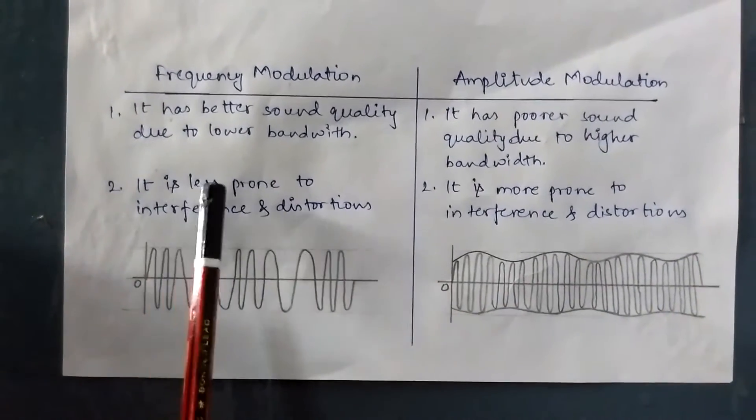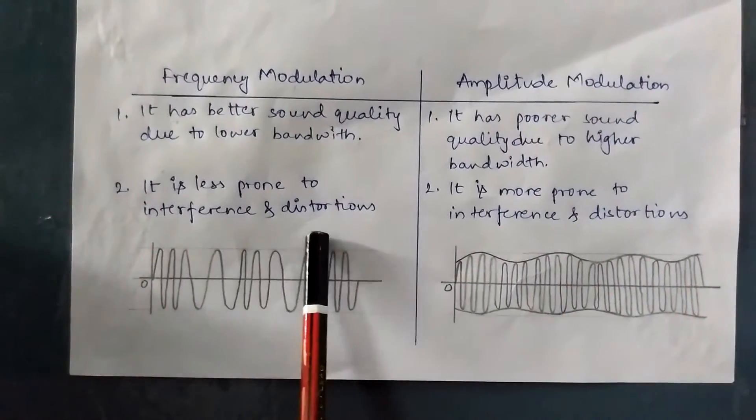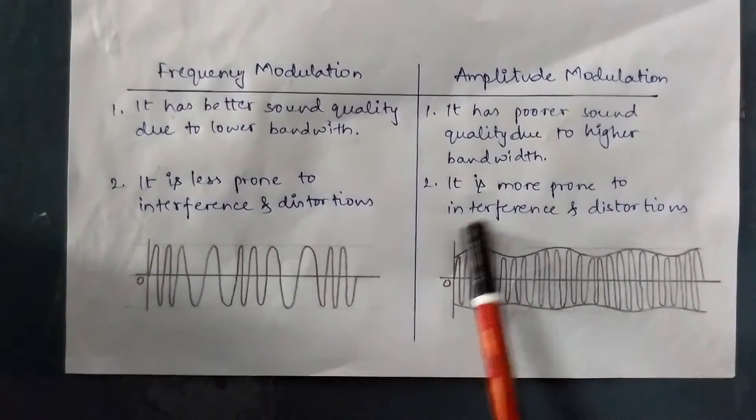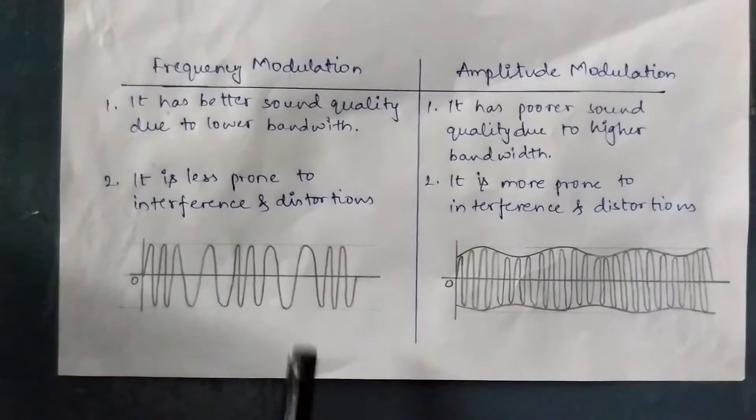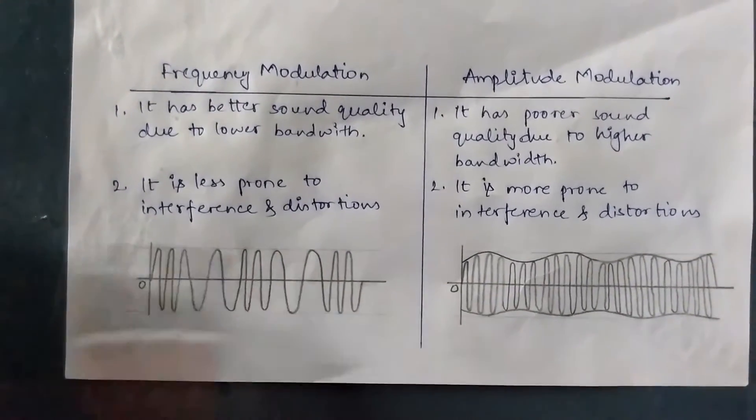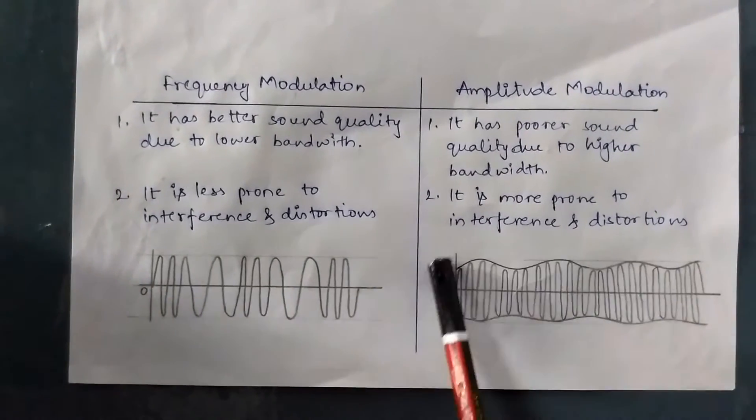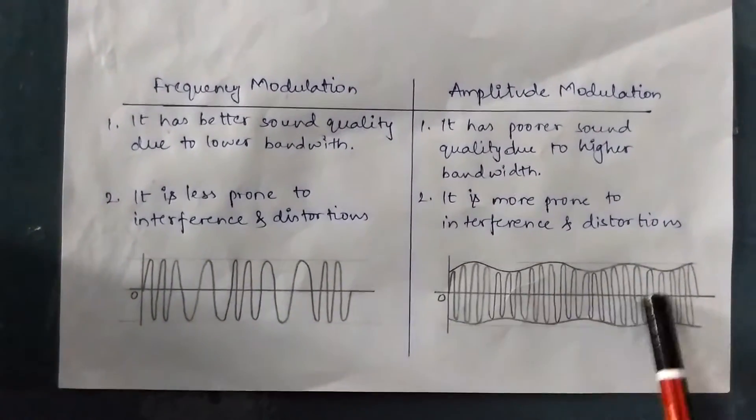Frequency modulation is less prone to interference and distortion, and amplitude modulation is more prone to interference and distortion. This is my frequency modulation wave diagram, where frequency varies. And this is my amplitude modulation diagram, where amplitude varies.